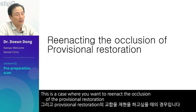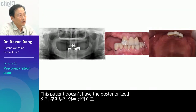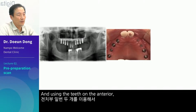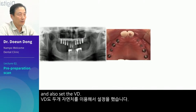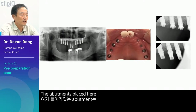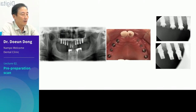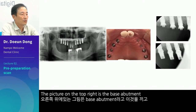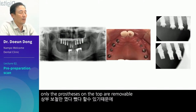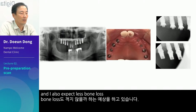This is a case where you want to reenact the occlusion of the provisional restoration. This patient doesn't have the posterior teeth — I placed implants in those areas. And using the teeth on the anterior, I made anterior guidance and also set the VD. The abutments placed here are the eco-abutment that was newly developed by DIO. The picture on the top right is the base abutment — with this fastened in place, only the prostheses on top are removable. This makes the patient less uncomfortable and also bleed less. I also expect less bone loss.